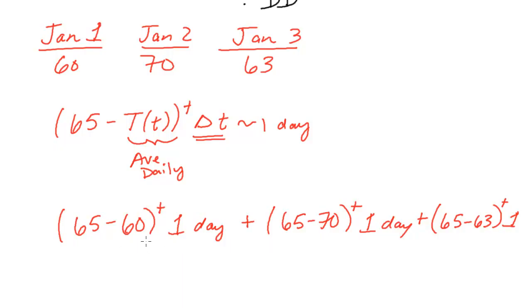So, now we can go ahead and let's evaluate these different things. So, 65 minus 60 is positive 5. We're positive so we keep the 5 and we have 5 times, this is degrees F. Forgot my units everywhere. So we have 5 degrees F times one day here.